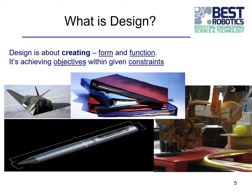Let's start with some important foundational concepts. What is a design? In this CDR for your best project this year, it's about what's the design of your robot. The design is about creating your robot — the form and the function. The form is what does it look like and how is it made, and the function is what does it do. And of course it's about achieving the objectives, which are the tasks you need your robot to do given the constraints, like the weight and the size.